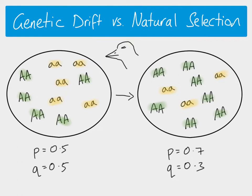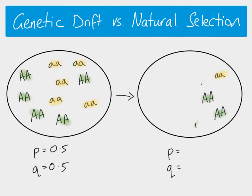Genetic drift is different. Genetic drift is also a change in allele frequencies, but it is random. Let's look at how that might work, starting with the same gene pool of our green and yellow insects.